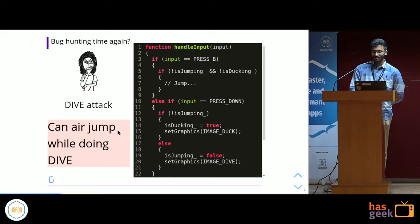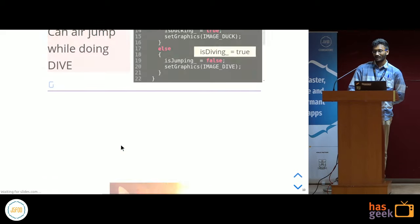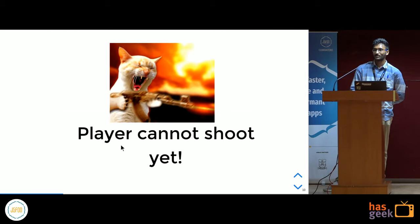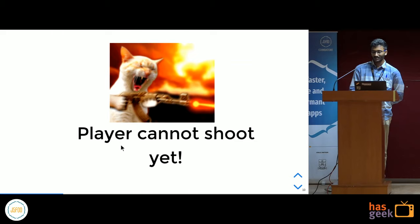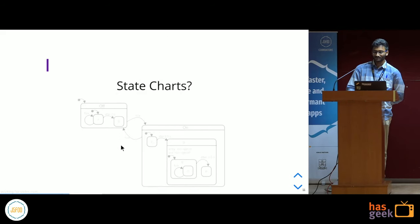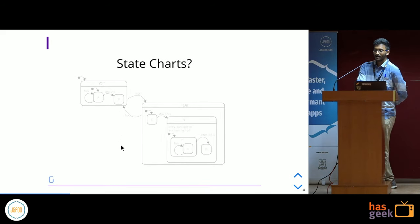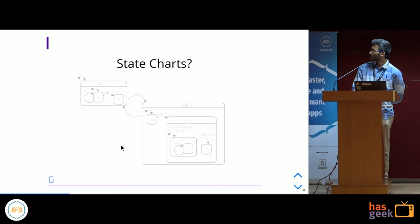This time, if I'm doing the dive, when jumping from height and pressing button B again and again, I keep air jumping. So I need to introduce a new flag called isDiving and keep adding more and more flags to the code. This is the common situation we all end up in when we start with simple if statements — and remember, we haven't even started writing code for the shooting feature yet.